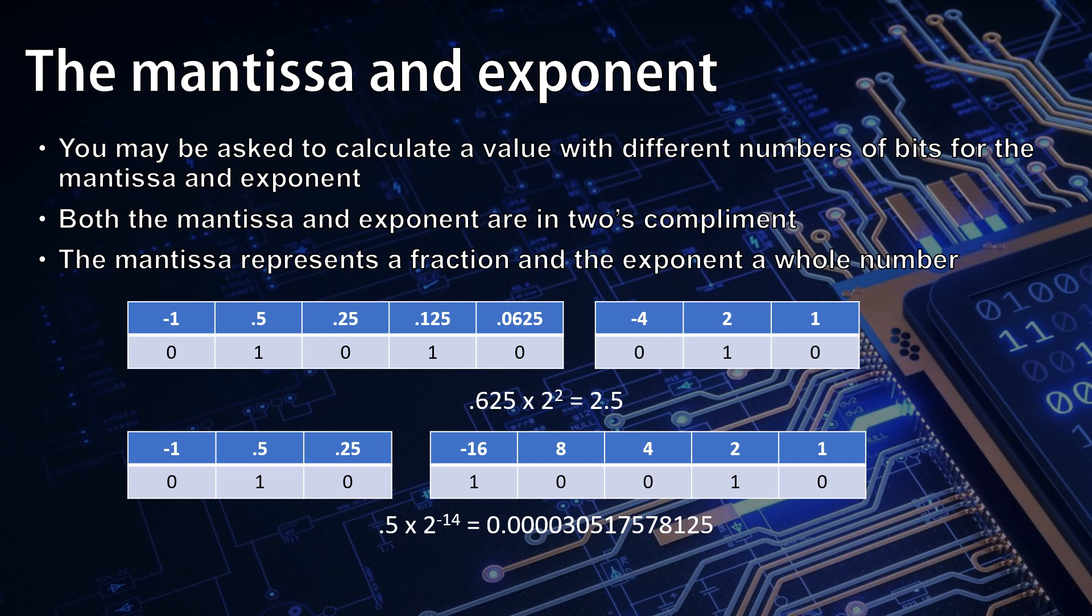So looking at our example eight bit number 01010010, we can see that if we're using five bits for the mantissa and three bits for the exponent this would work out to two point five.